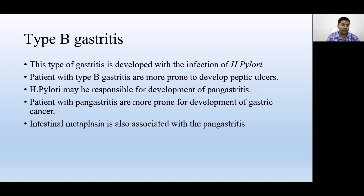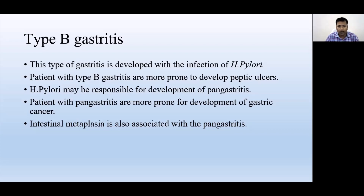Metaplasia may lead to carcinoma development. The most common cause of gastric carcinoma is H. pylori infection, and the most common cause of peptic ulcer is also H. pylori infection. Type B gastritis is the most common type of gastritis, and H. pylori infection is responsible for it.